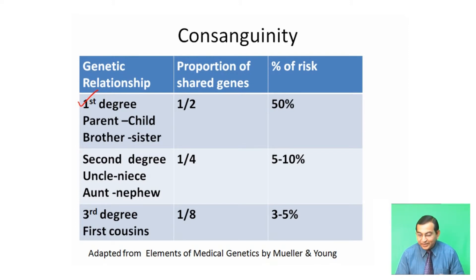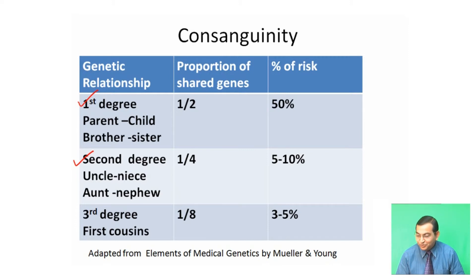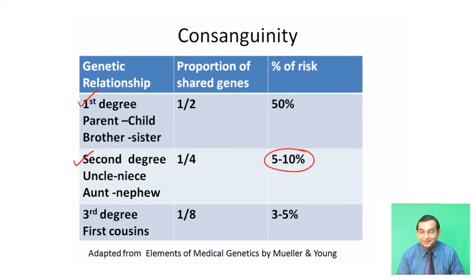In a second degree genetic relationship, such as marriage between uncle-niece or aunt-nephew, the proportion of shared genes is one-fourth and there is a five to ten percent risk of appearance of recessive characters. In third degree or first cousin relationships, the proportion of shared genes is one-eighth and there is a three to five percent risk of appearance of recessive characters.